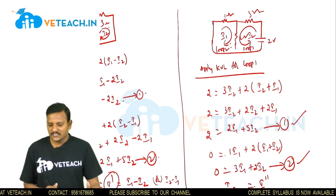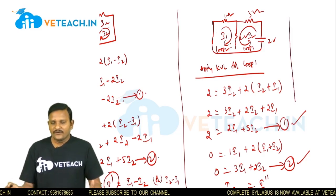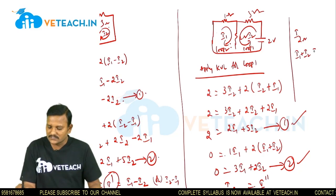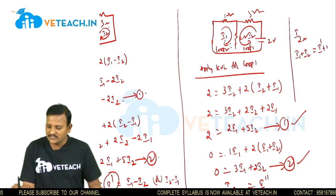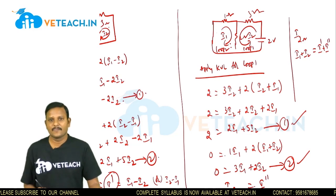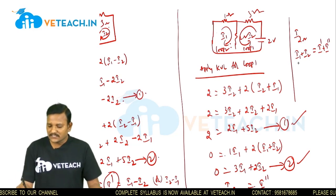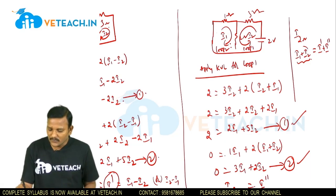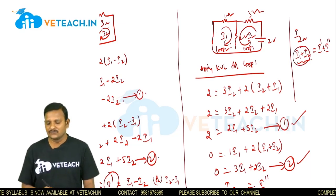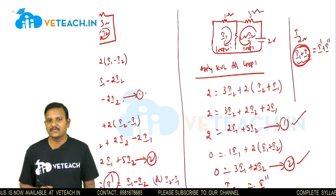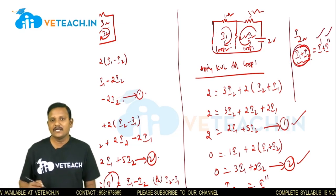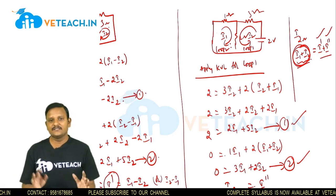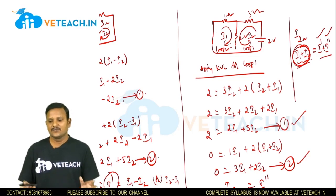The superposition theorem is verified if the total current through the 2 ohm resistor when both sources act simultaneously (I1 + I2) equals the sum of individual contributions (I' + I''). If these are equal, the theorem is verified; if not, it is not verified.